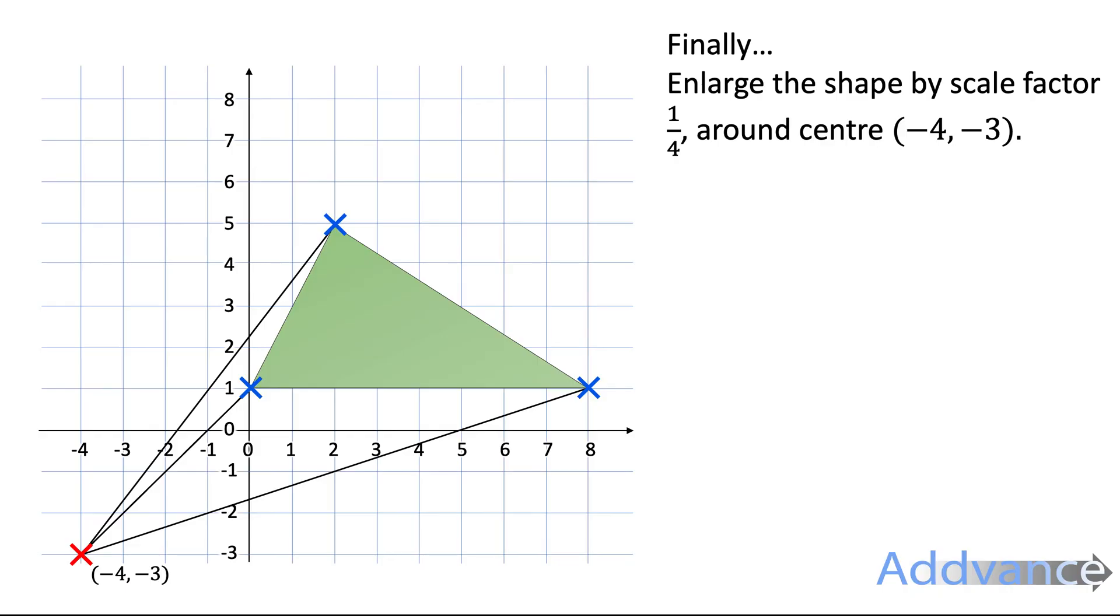And what we do is we move the corners of the shape a quarter of the way from the centre of enlargement. So the distance between the centre of enlargement and the corners of the shape is divided by four. For example look at this one. This blue shaped corner here was four squares away from the centre. Now four times a quarter is one, so now it's only one corner away.